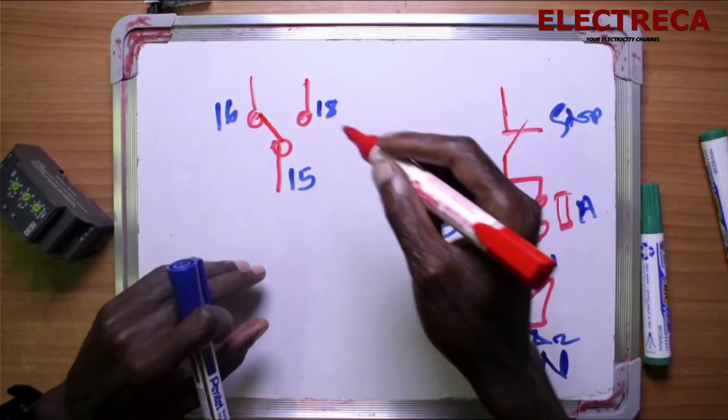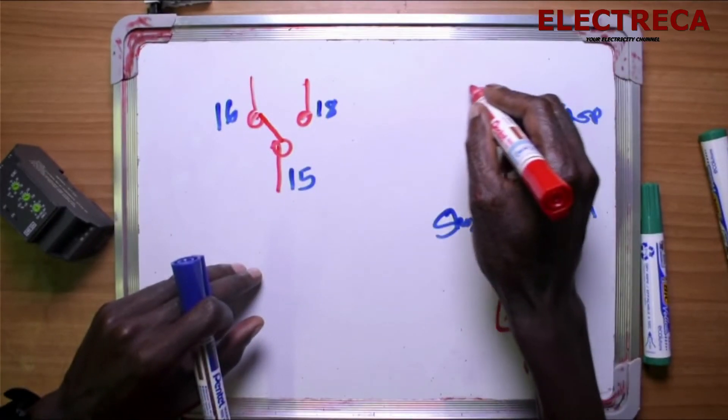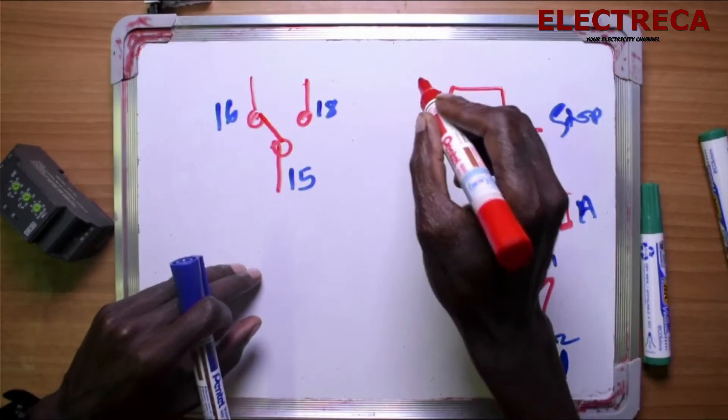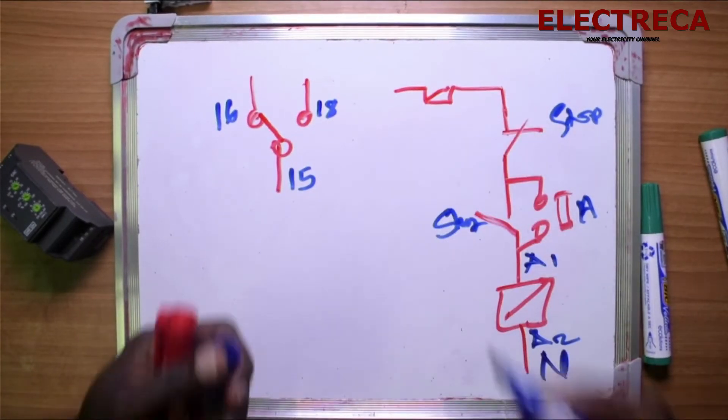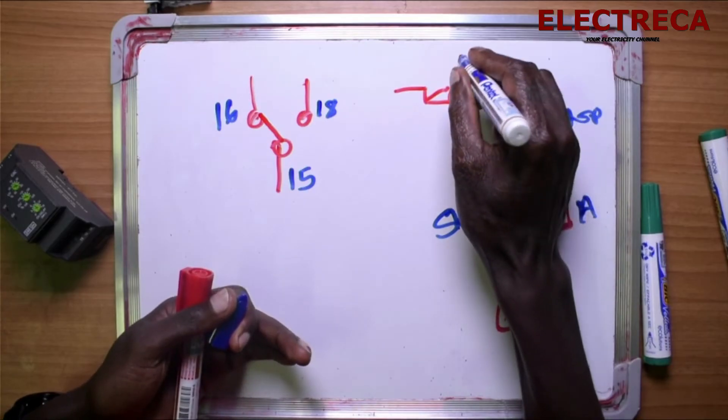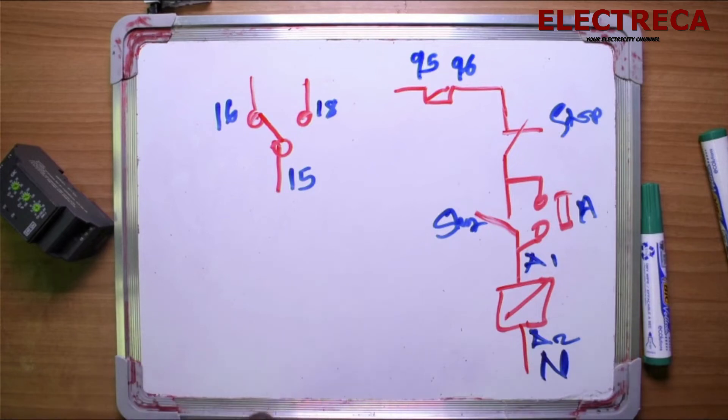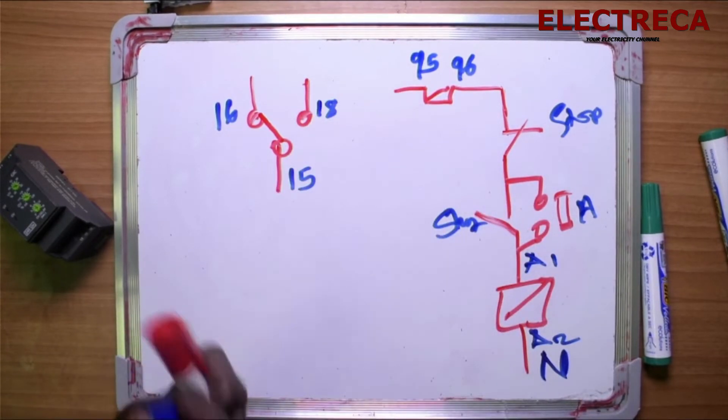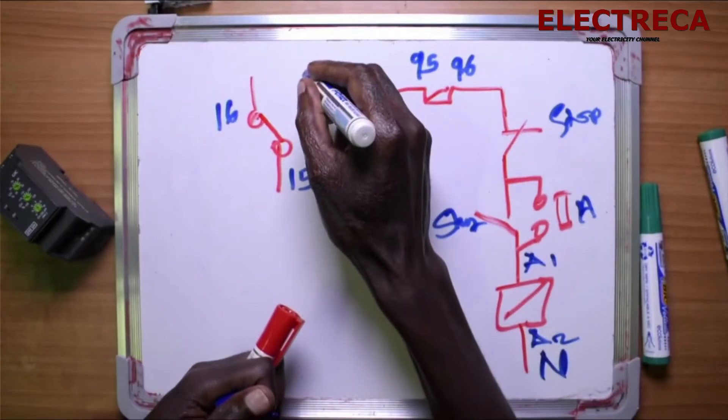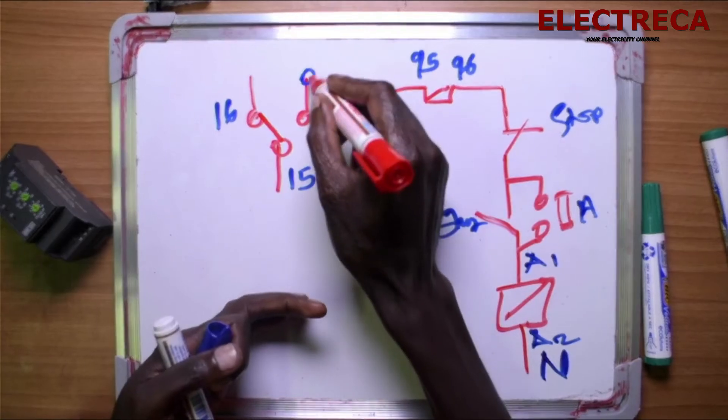So it is always in series. You have maybe your overload here. So you have 96 and the 95 contacts on the overload.